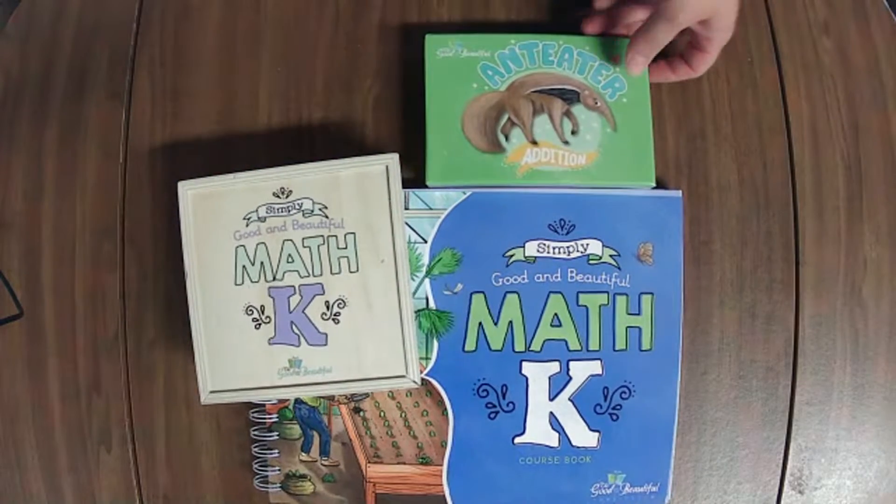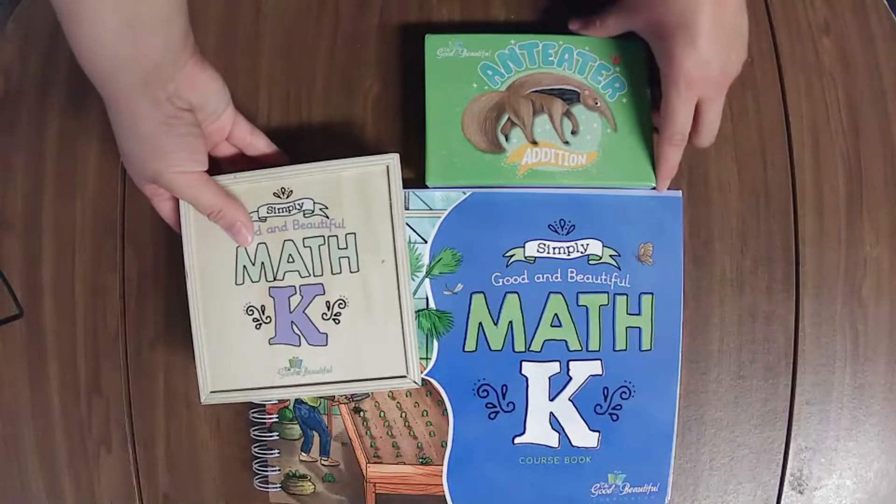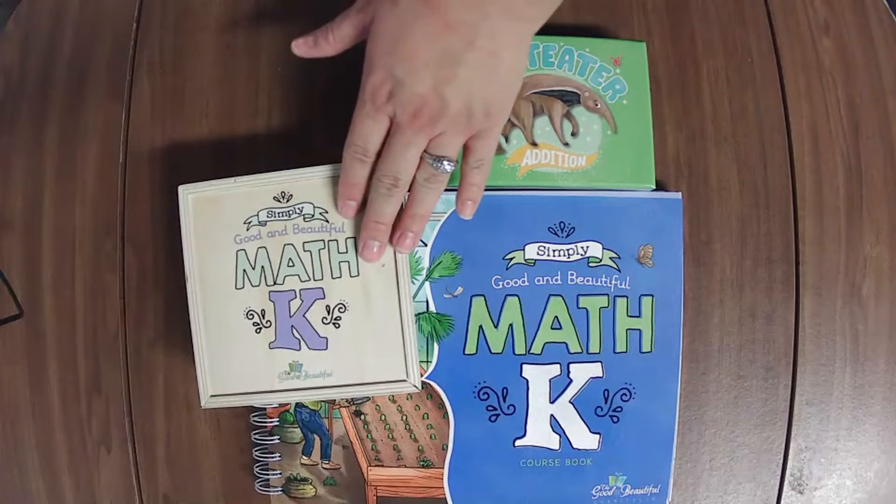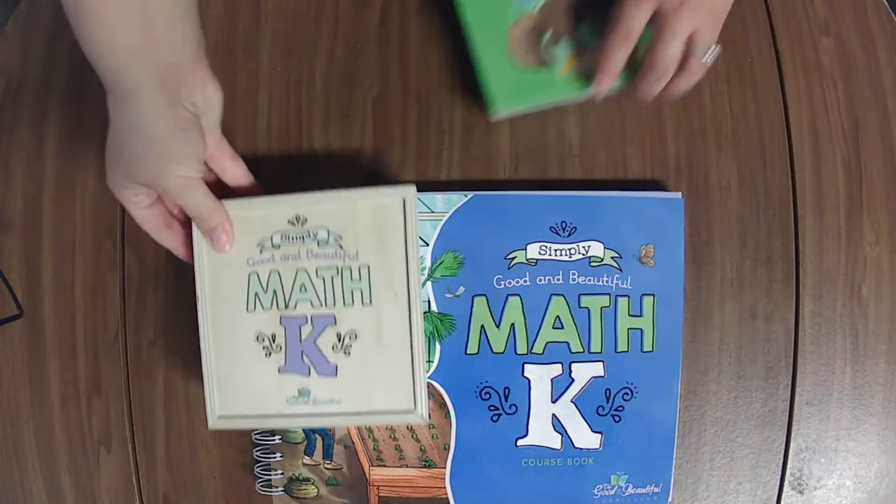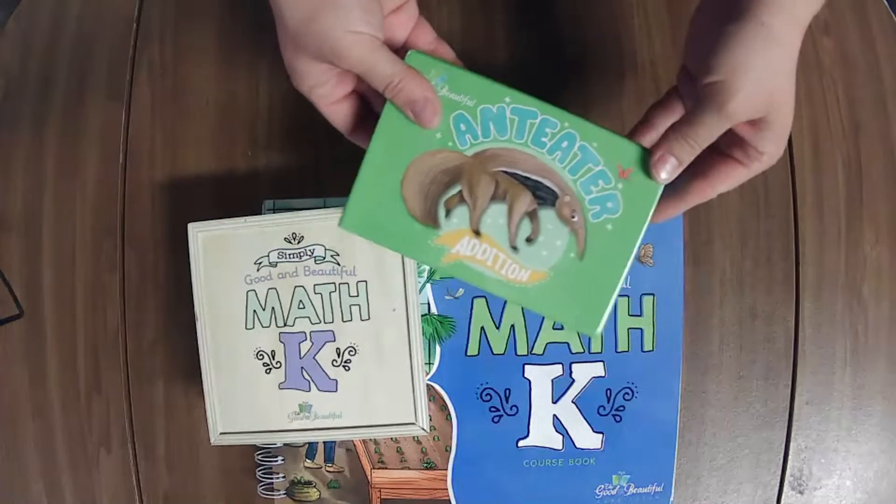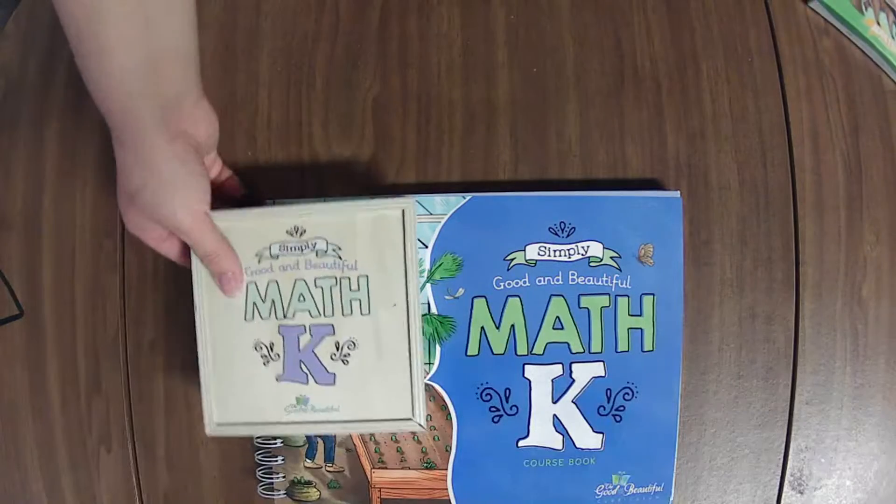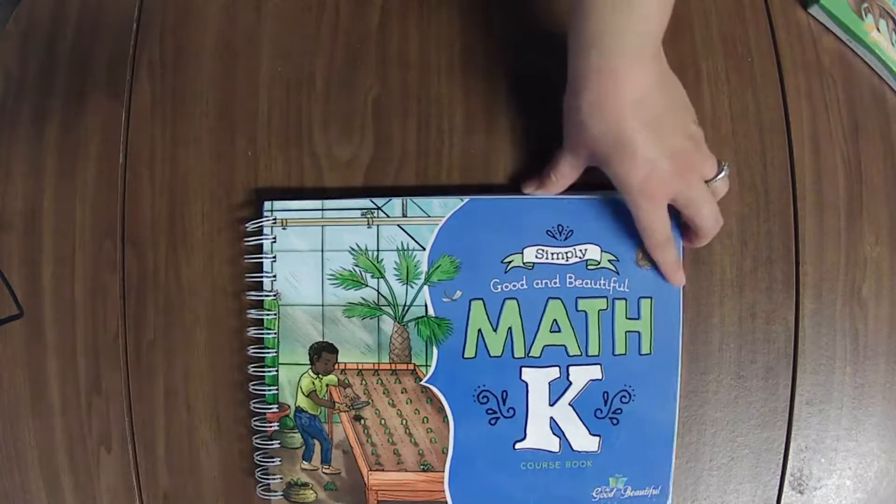Hello there friend, we are live and we're going to jump in to do a flip through of The Good and the Beautiful Math Course K. These two items come in the course set, this one was an extra bonus that we'll check out. So let's jump right into the course book.